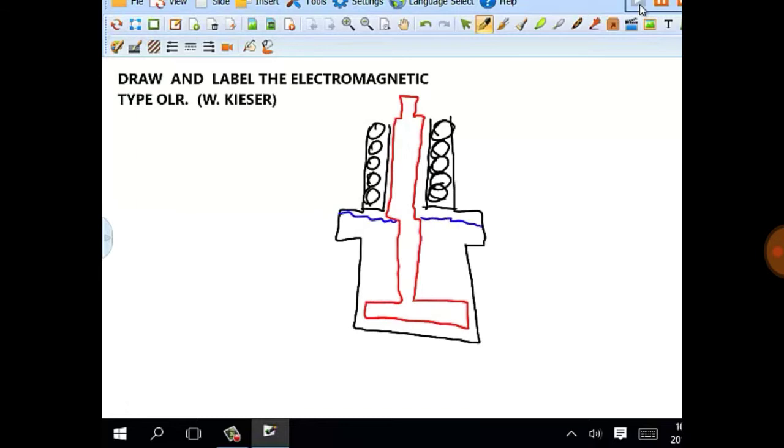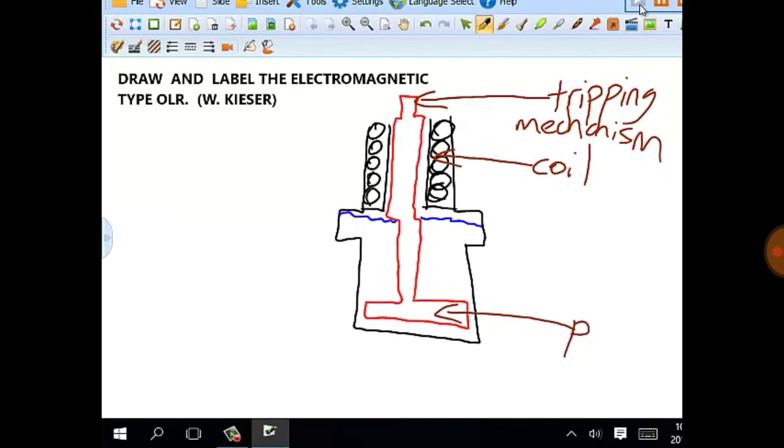Now, we're going to fully label this illustration. First, we're going to point out the coils. Then, the tripping mechanism. Then, we will label the piston. And then finally, we will label the oil and the iron armature.